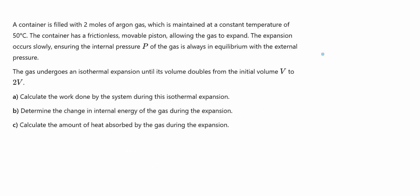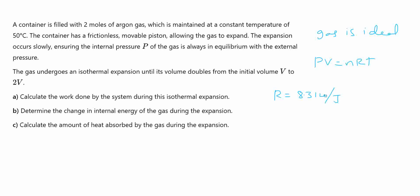The gas given is an ideal gas, which is argon. In the question it is mentioned that the gas is ideal, and we know argon gas is ideal. For an ideal gas, PV = nRT, where n is the number of moles and R is the gas constant, which is 8.314 joules per mole per kelvin.